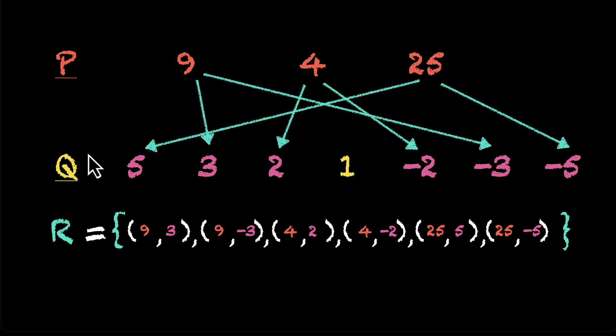So if X is from P and Y is from Q, can we say that X is equal to Y squared? That's going to be a relation. That's going to be the connection between P and Q. Let's write that down.